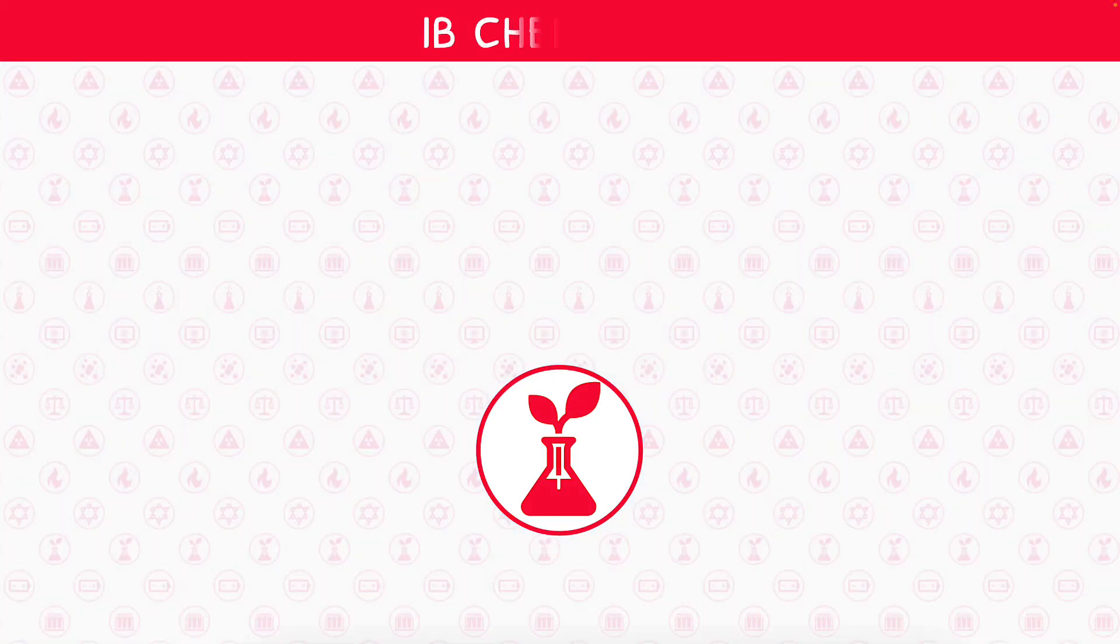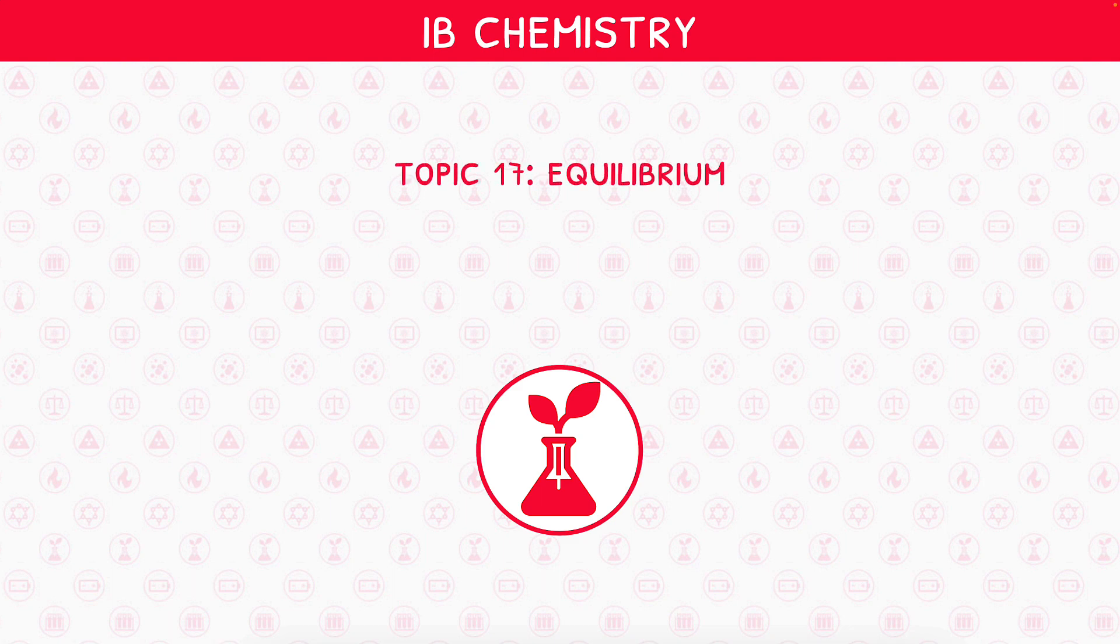Welcome back to our IB Chemistry video series. This is the first and final video in higher level IB Chemistry Topic 17, Equilibrium, where we will be looking at calculations involving Kc and Gibbs free energy.